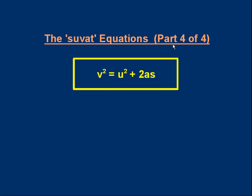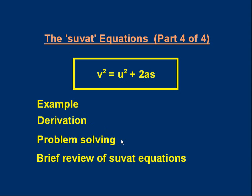Hello, welcome to part four, which is the final part of this lesson on the SUVAT equations. We're going to take a look at the equation v² = u² + 2as. We'll start with a simple example, then look at the derivation, do some problem solving, and finish with a quick review of the SUVAT equations.